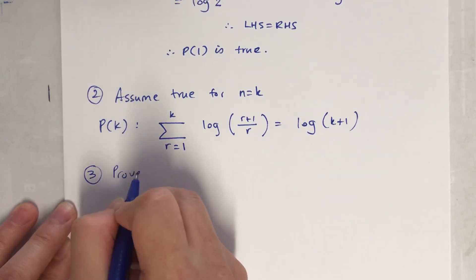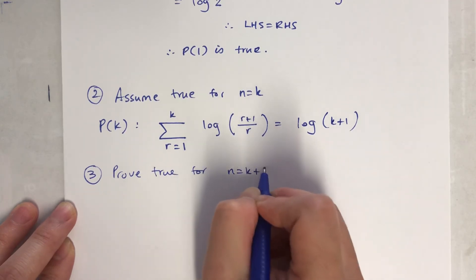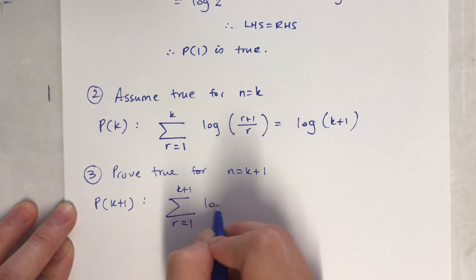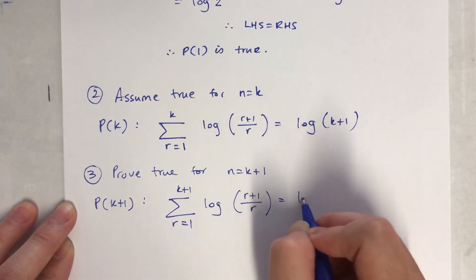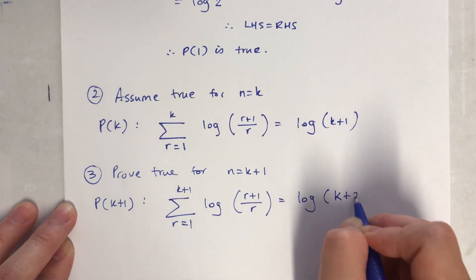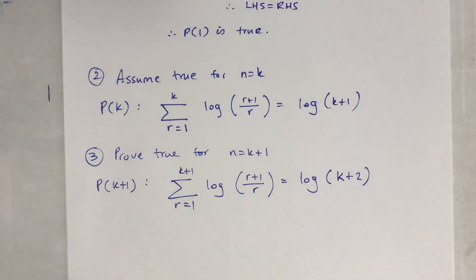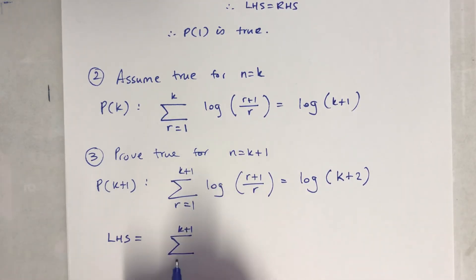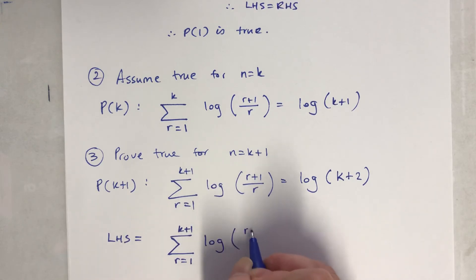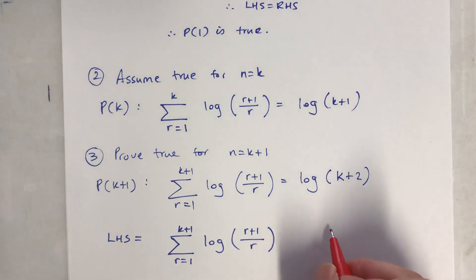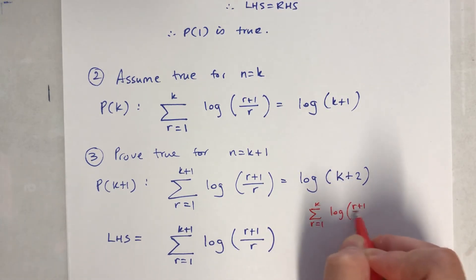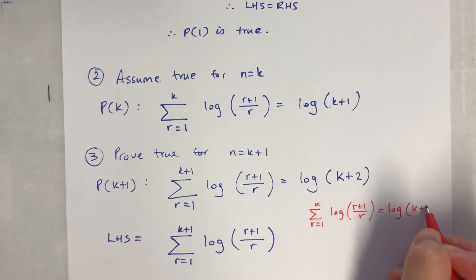Step 2: assume true for n equals k. So the sum from r equals 1 to k of log(r+1) equals log(k+1). Step 3: prove true for n equals k plus 1. The right hand side becomes log(k+2). That's what I need to prove.